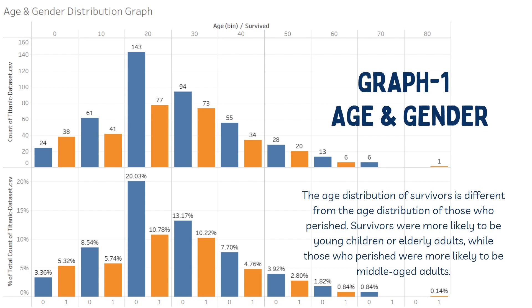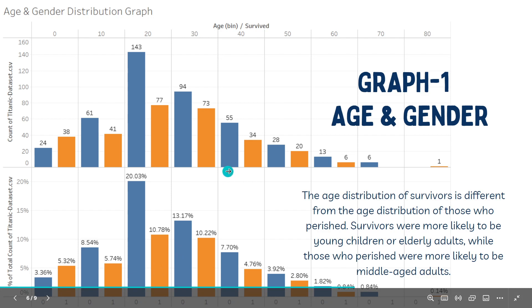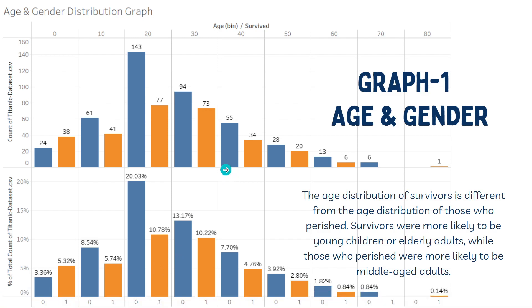The first graph is about age and gender distribution, divided into two main sections — one for male passengers and one for female passengers. Each section is then divided into 10 age bins ranging from 0 to 80 years old. The bars within each age bin show the number of passengers who fell into that age range and gender, and whether they survived or not. The percentage at the bottom shows the proportion of passengers in each gender survival group.